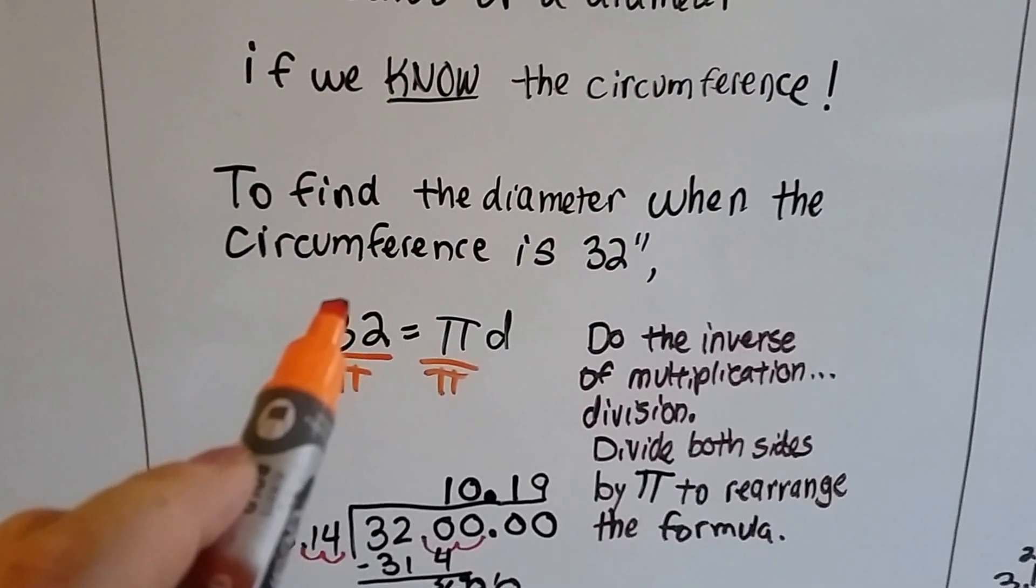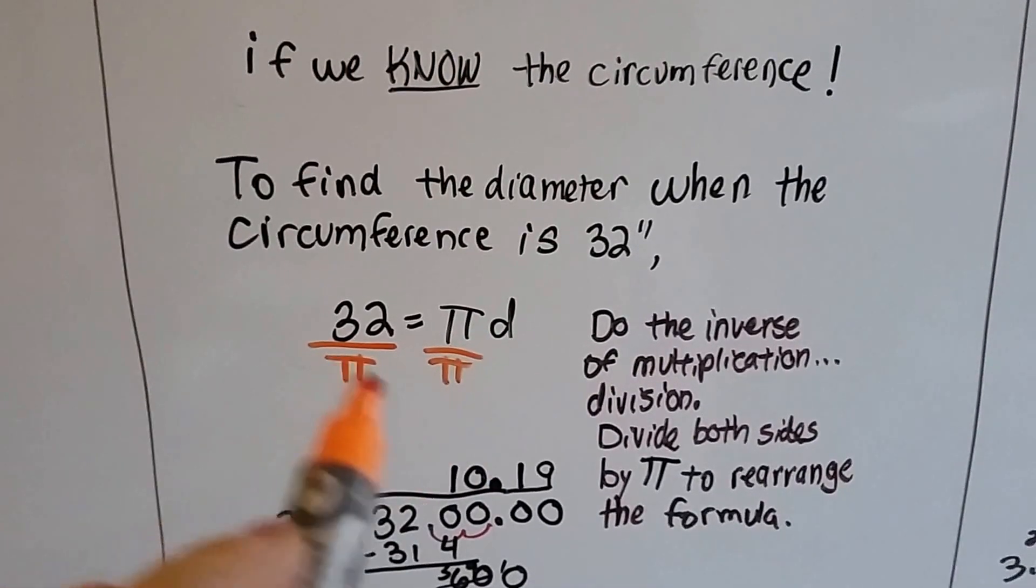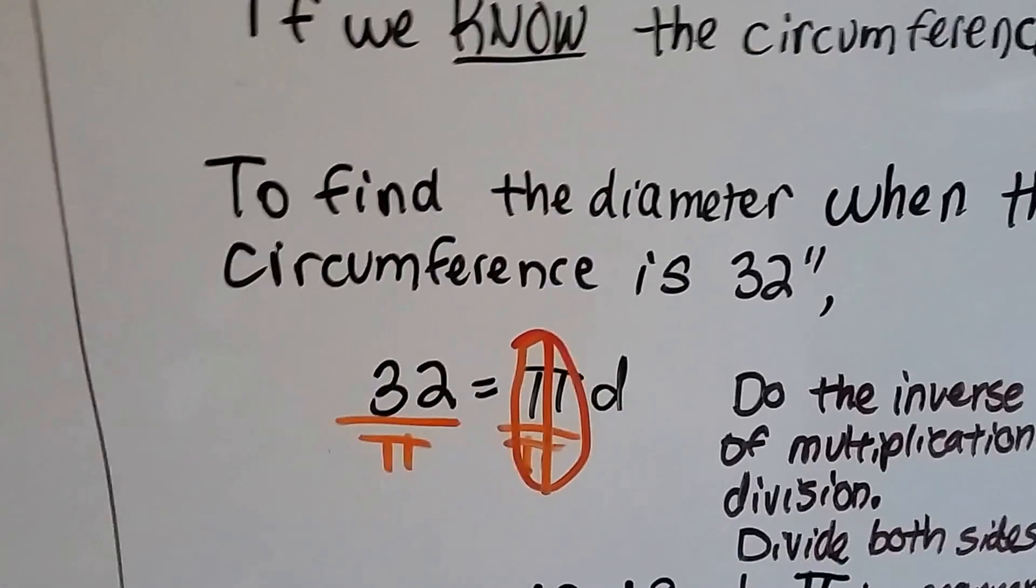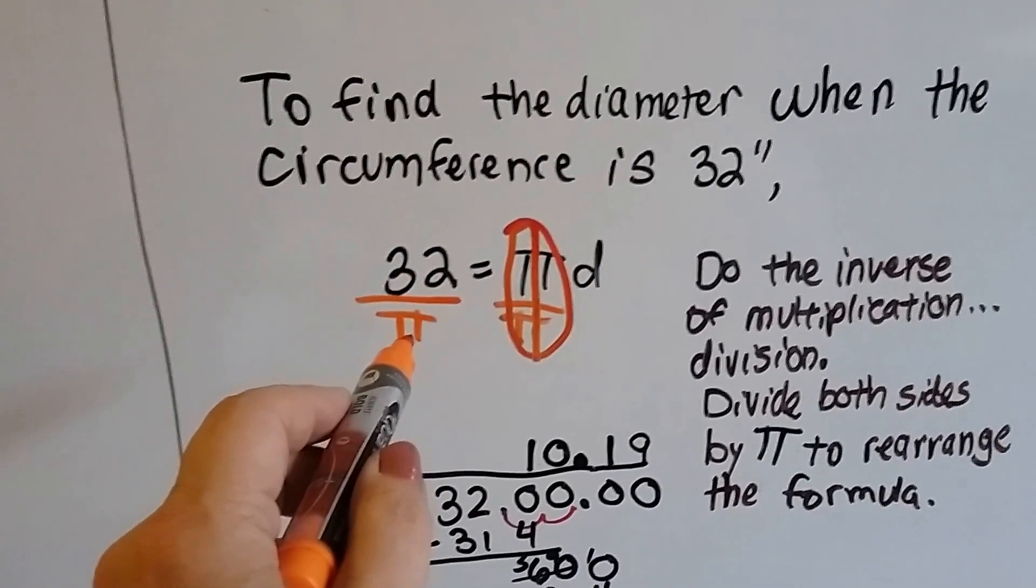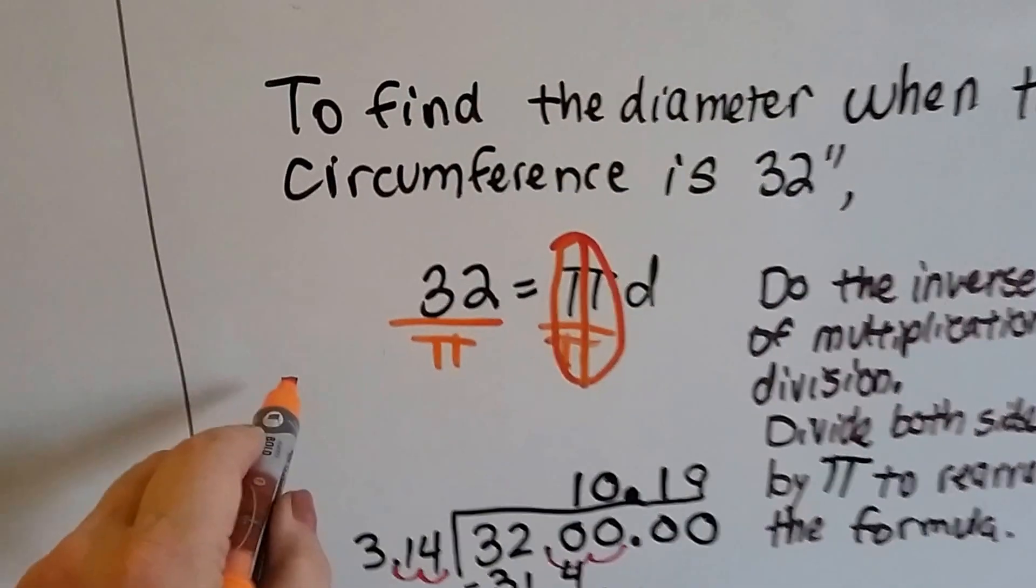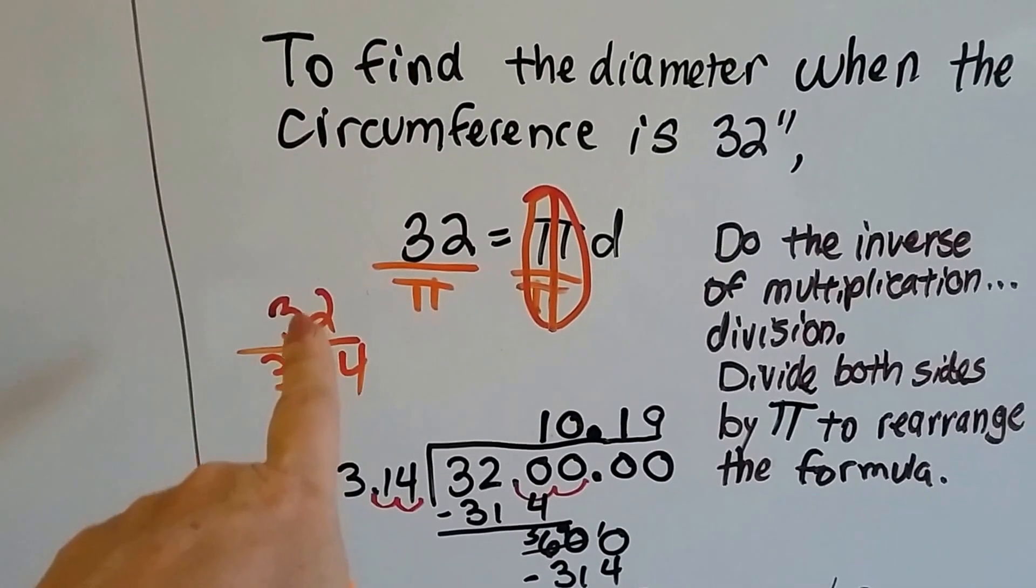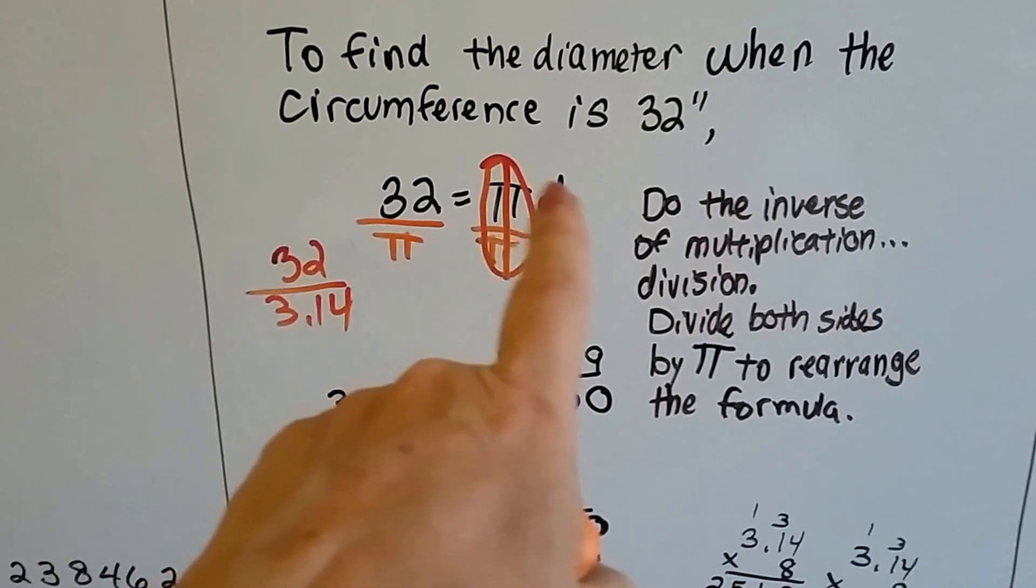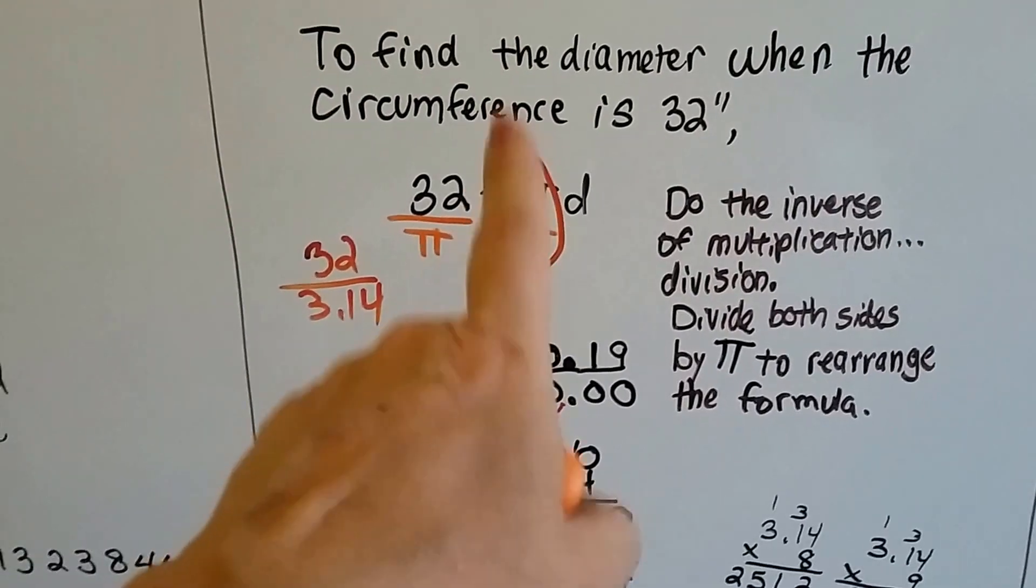To find the diameter when the circumference is 32, instead of using c equals pi d, we know the circumference is 32, and because we need to find d, we need to get the d by itself. So what we do is we divide both sides by the pi symbol. That's pretty much saying that this is going to cancel out and turn into a 1, because the numerator and denominator are the same. And then it vanishes. It becomes an invisible 1. Now we have 32 over pi, which would be 32 over 3.14. So that means we need to divide 32 by 3.14. It's the inverse of multiplication.